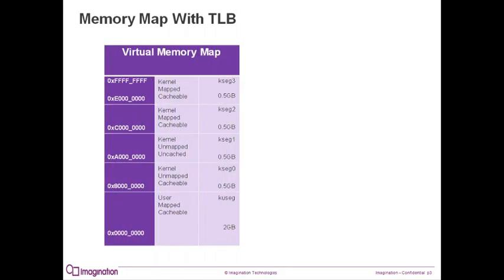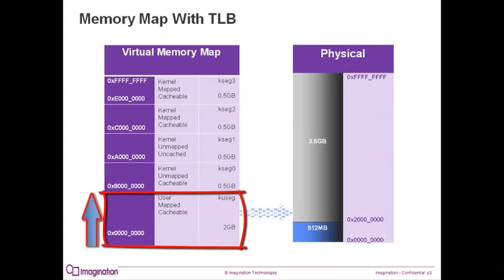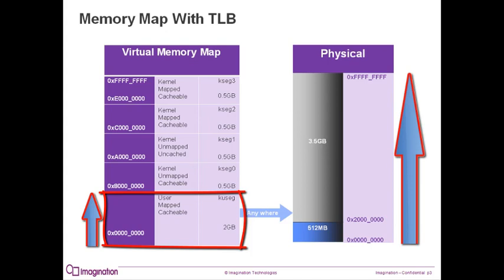Let's review the MIPS memory map when using a TLB. Here is a picture of the virtual memory map. On a MIPS 32 core, it can cover a 4 GB range of physical memory. The lower segment of memory, KUSeg, covers a virtual address range from 0 to 7FFFFFFF, and can be cached and mapped using the TLB to anywhere in physical memory.